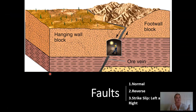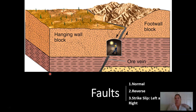With faults, we have three different basic types: normal, reverse, and strike-slip. We have three basic types because we have three different types of stress that can occur. Depending on the stress, it'll yield a different type of fault.